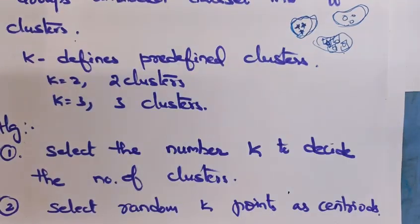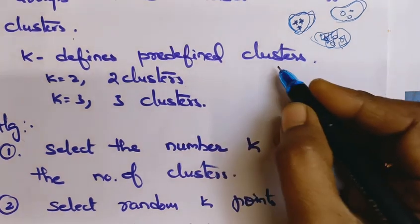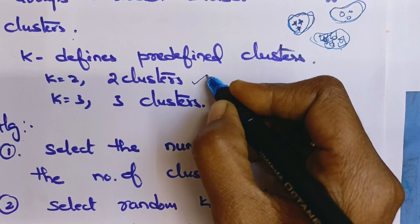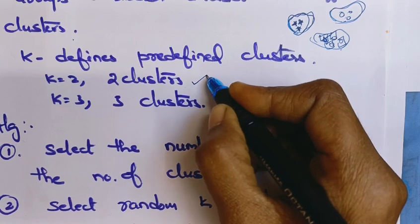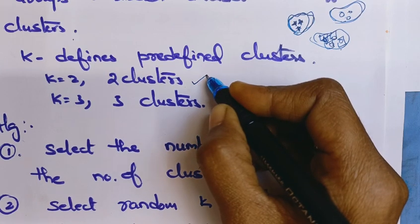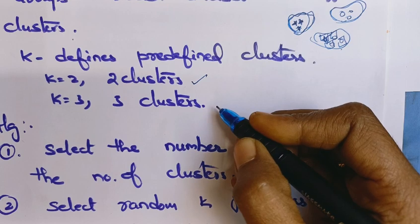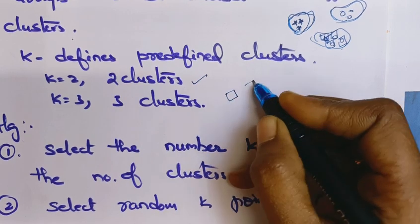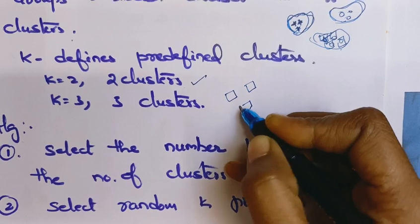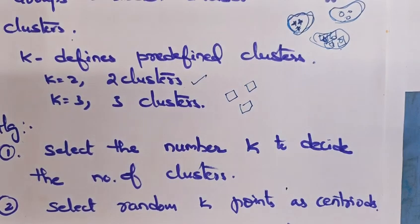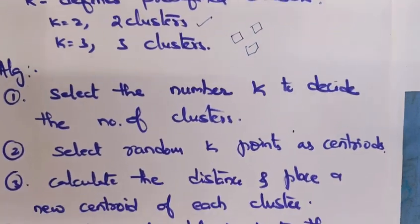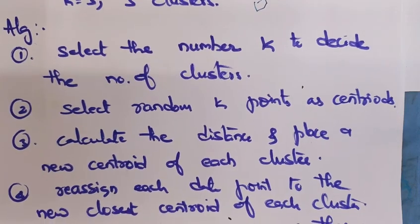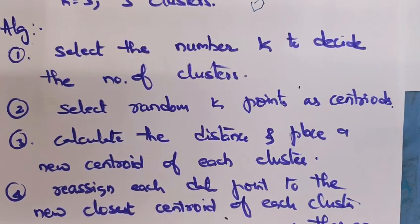K defines the predefined number of clusters. If K equals two, we need to form the dataset into two clusters. If K equals three, we need to form the dataset into three clusters, and so on.